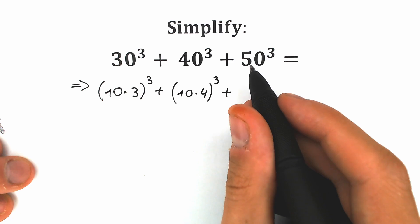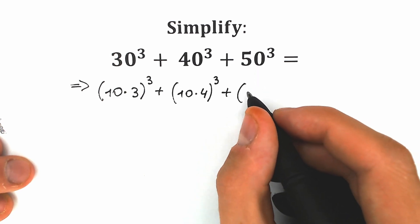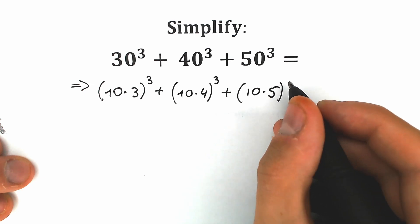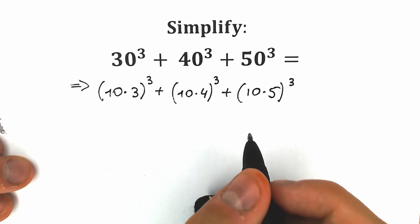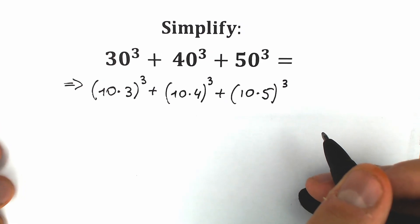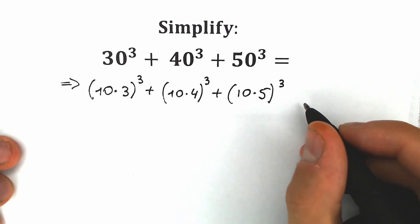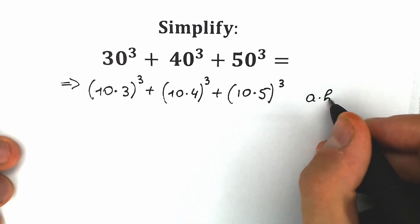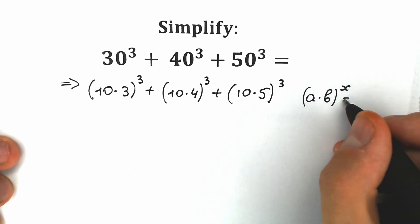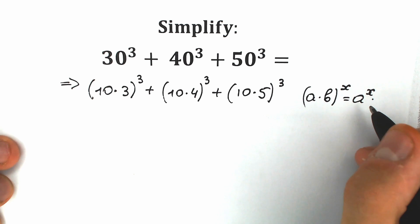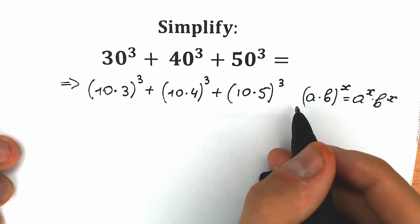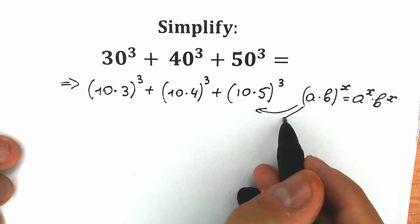Plus 5 times 10, or 10 times 5, to the third power. So this is our first step. Right now we're going to apply this really interesting power rule. The rule looks like this: if we have a product inside parentheses, we need to raise both elements to the power x.